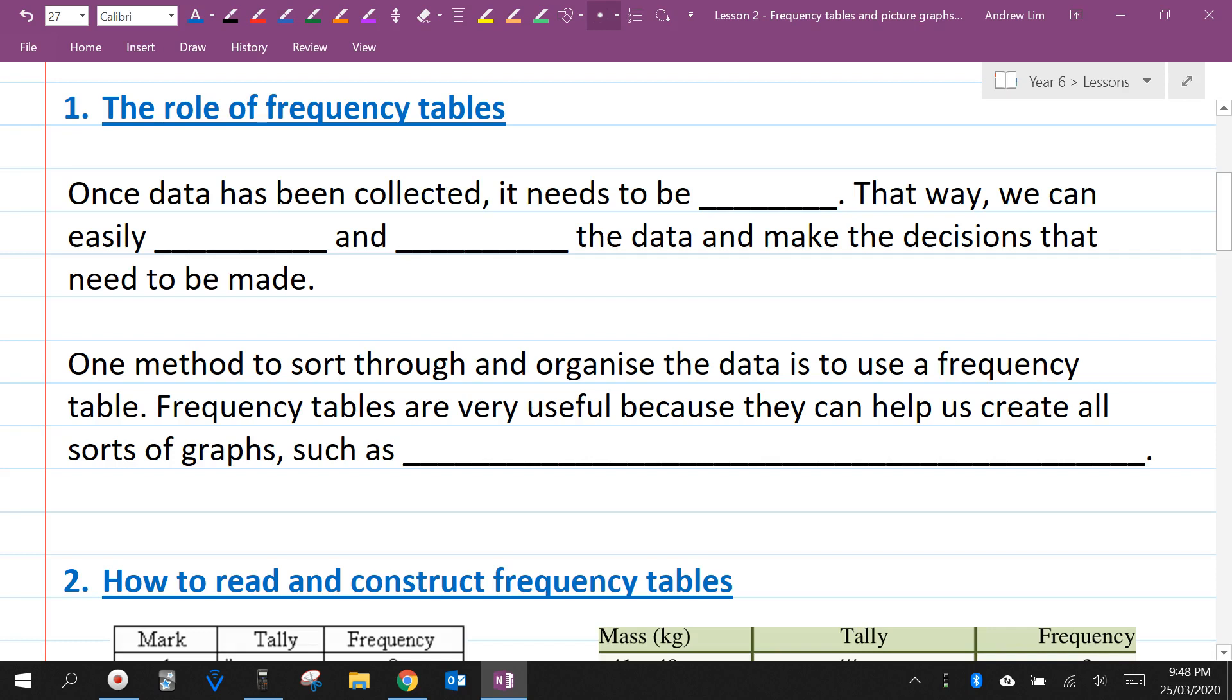Once data has been collected, it needs to be sorted. That way, we can easily organize and analyze the data, and make the decisions that need to be made. One method to sort through and organize the data is to use a frequency table. Frequency tables are very useful because they can help us create all sorts of graphs, such as column graphs, pie charts, dot plots.